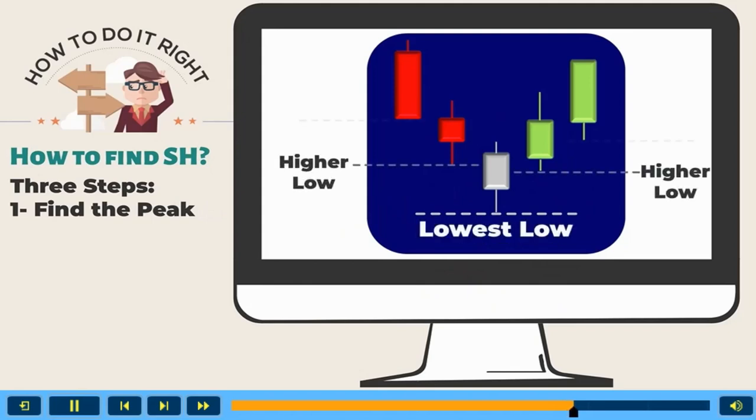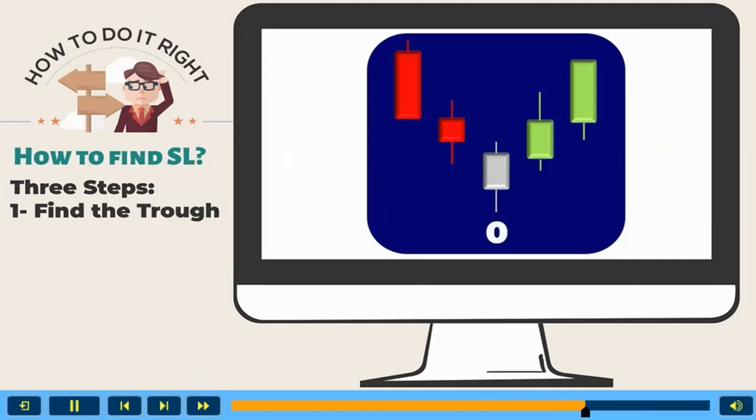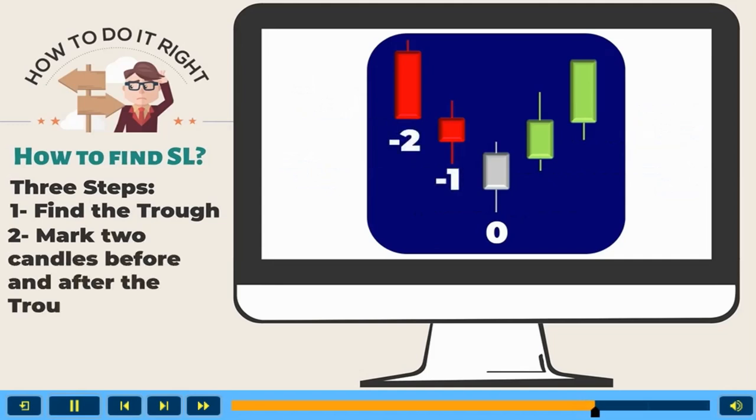Step 2, mark the two candles before the zero candle as minus 1 and minus 2, and after zero candle as plus 1 and plus 2 accordingly.